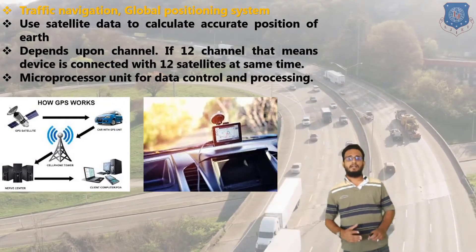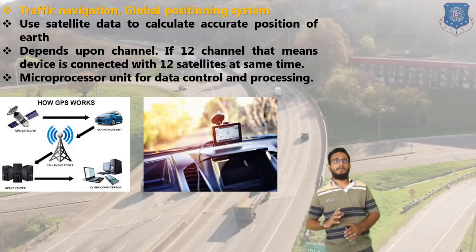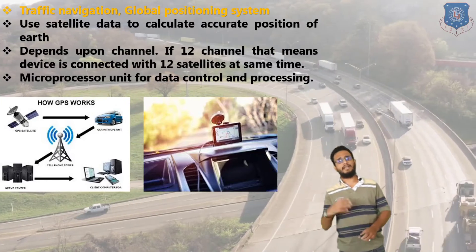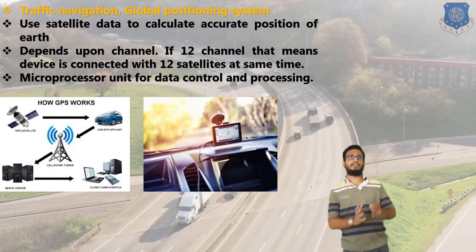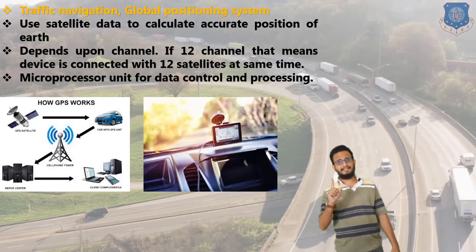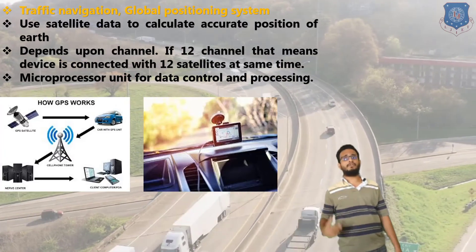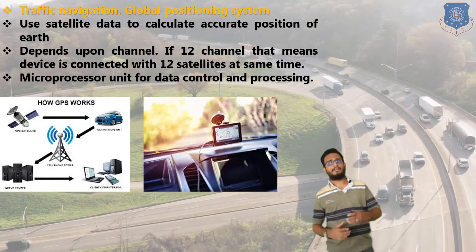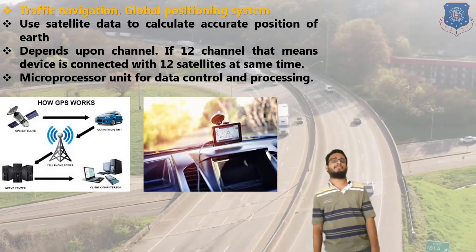Now we discuss traffic navigation and the global positioning system. GPS is common nowadays and we have GPS facilities in automobiles — cars and trucks. GPS is important because we can easily navigate our drives and reach destinations on time. GPS uses satellite data to calculate the accurate position on Earth. If a device has 12 channels, it is connected with 12 satellites simultaneously. Microprocessors control the processing in traffic navigation systems, making GPS a major advantage in modern traffic management.